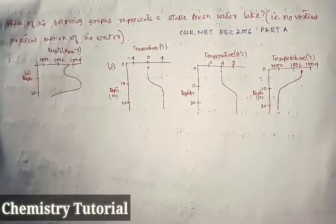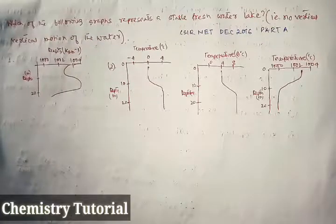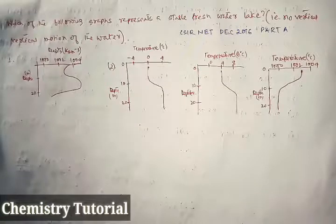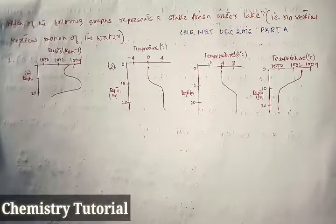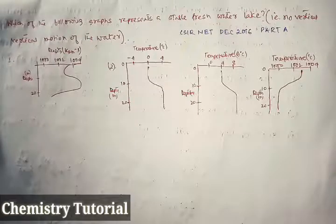This question appears in CSIR NET December 2016 Part A. The question is which of the following graphs represents a stable freshwater lake where there is no vertical motion of the water considered.